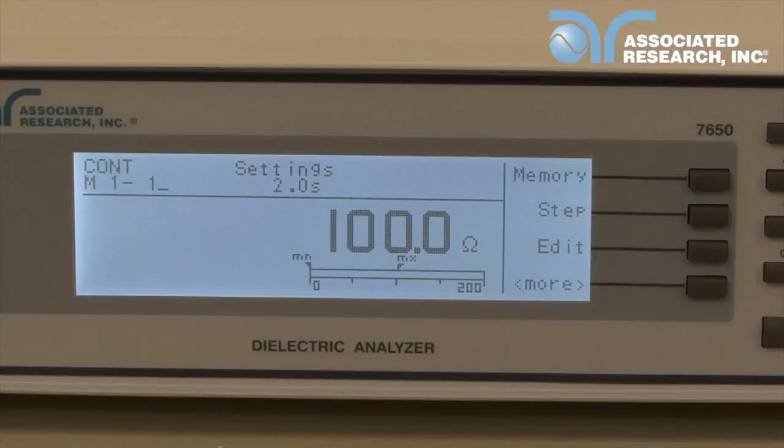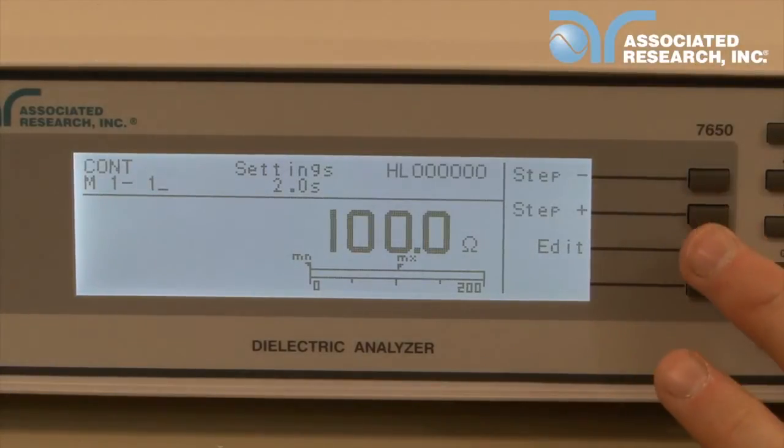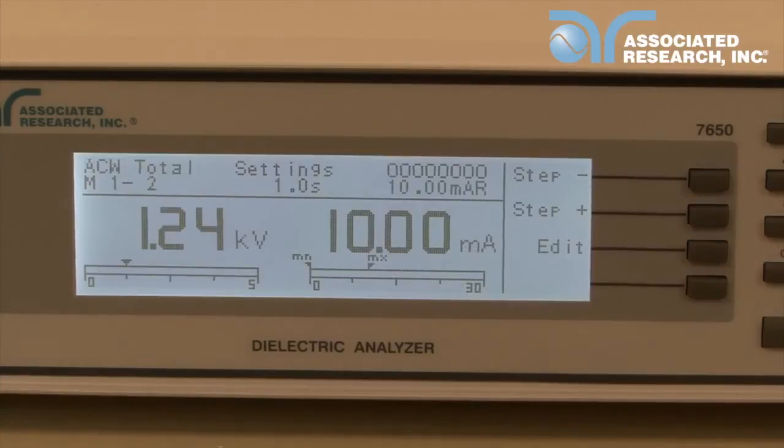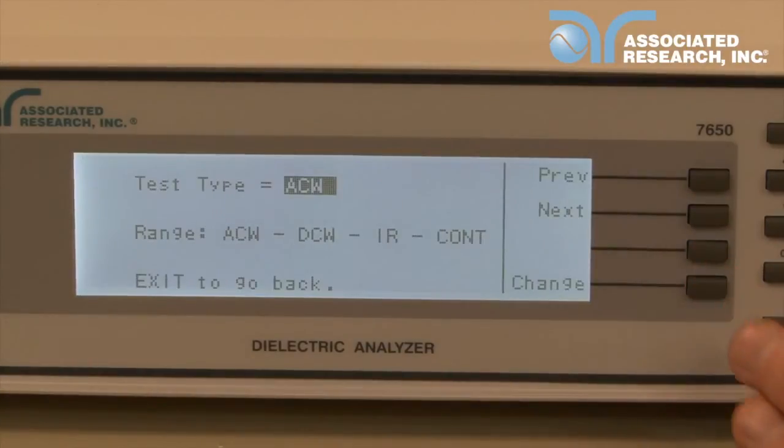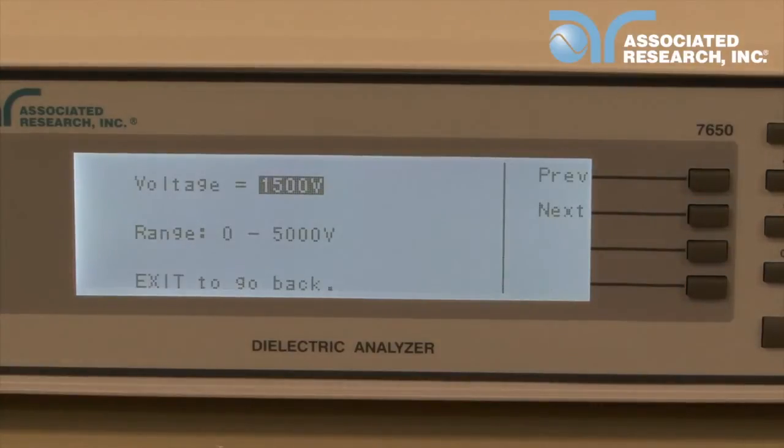The DC high pot test is set up in a similar fashion as the continuity test. Change the step number to number 2, then edit the test type and parameters. For this demonstration, we will set the DC high pot test at 1500 volts DC with a 3000 microamp high limit.